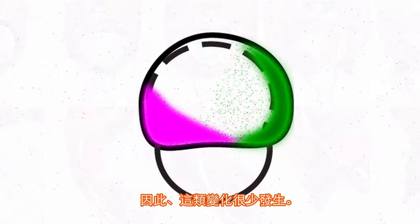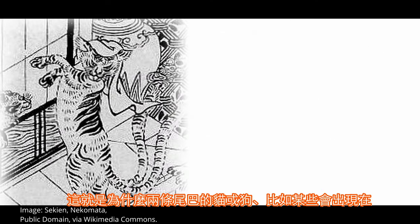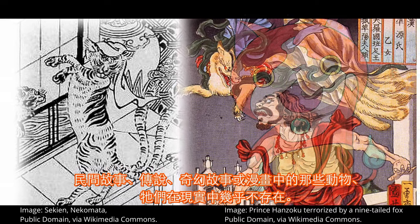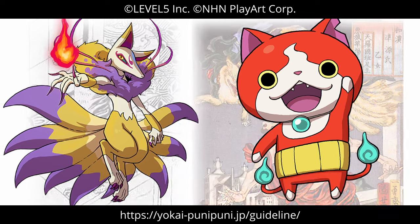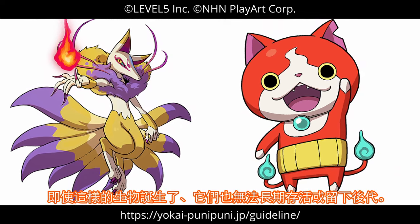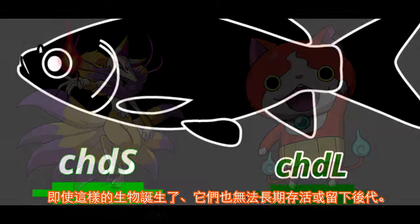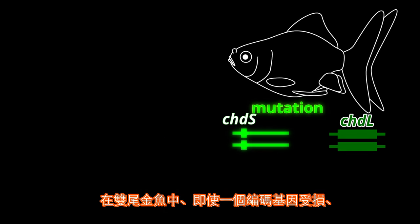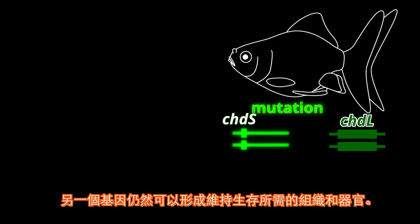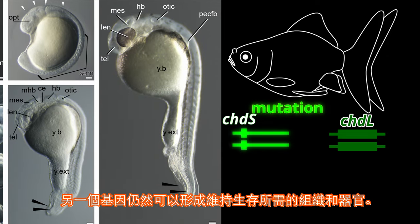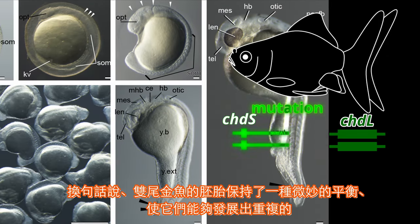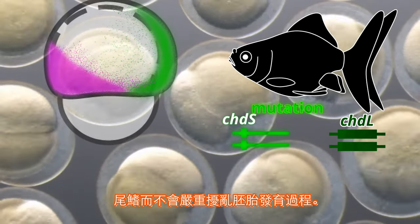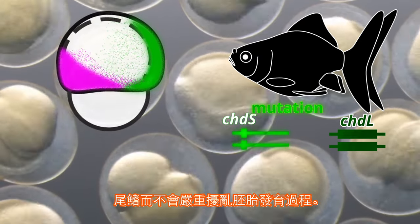Therefore, such changes rarely occur. That's why animals like cats or dogs with two tails, as seen in folk tales, legends, fantasy stories, or manga, are almost non-existent in reality. Even if such creatures were born, they wouldn't live long or be able to leave offspring. However, goldfish has two chordin genes. In twin-tailed goldfish, even if one chordin gene is damaged, the other gene can still form the tissues and organs necessary for survival. In other words, the embryos of twin-tailed goldfish maintain a delicate balance that allows them to develop duplicated caudal fins without severely disrupting the embryonic developmental process.